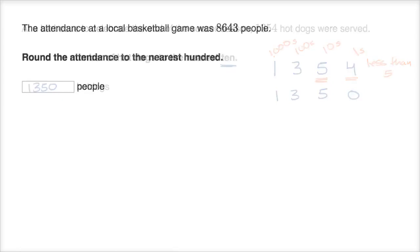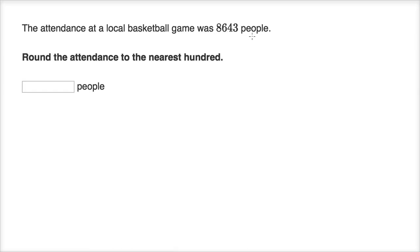Let's do another one. The attendance at a local basketball game was 8,643 people. Round the attendance to the nearest 100. Pause this video and see if you can figure that out. 8,643.